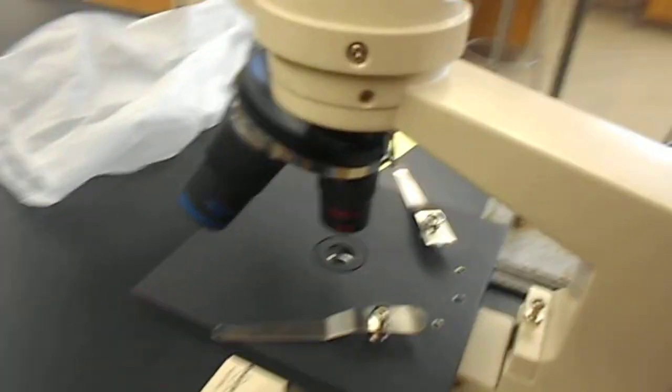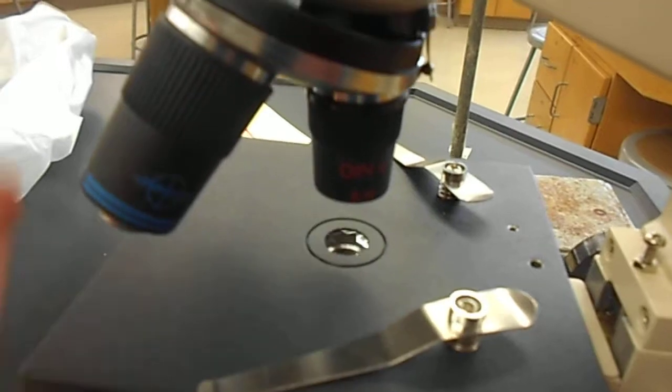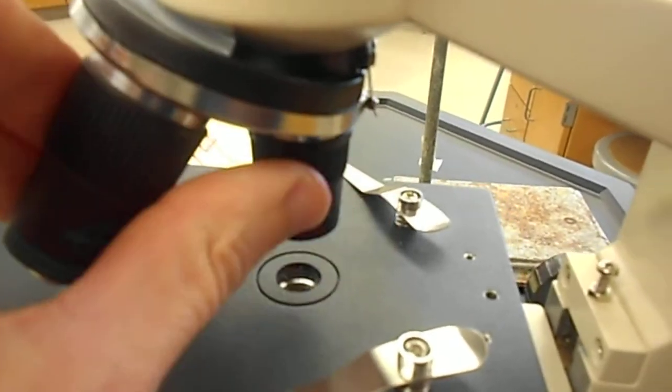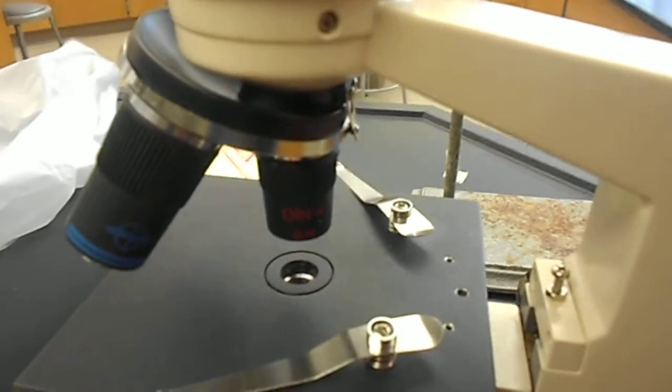So first of all, when you first start using one of these things, you want to set it to the shortest, smallest lens, which is usually labeled in red. I'm going to turn that so we're on the lowest power lens.